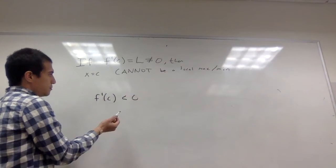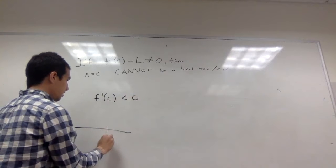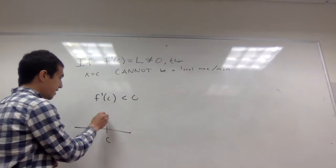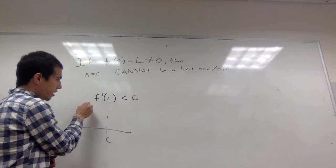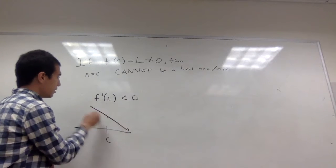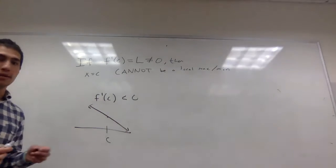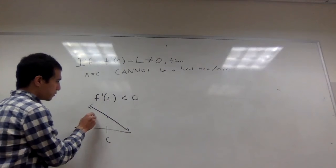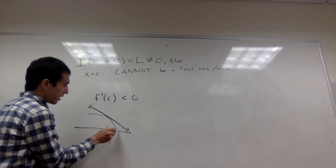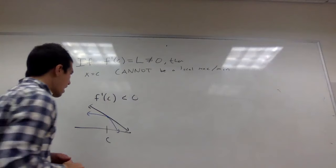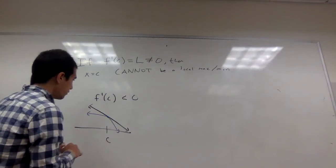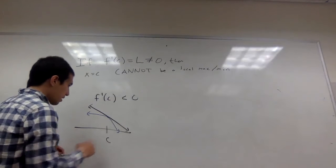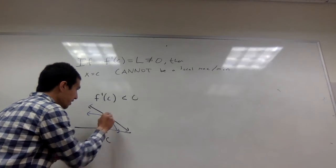And so what does this mean? This means that at this point x = c, the slope of the tangent line makes sense, and it's some non-zero number, so some negative number. So I'm going to draw the tangent line, something like this, and what this means is that my function f(x) might look something like this. And now as I've drawn it, you can sort of see that there's not a maximum or minimum here at this point c.